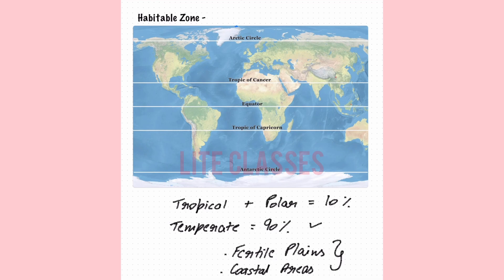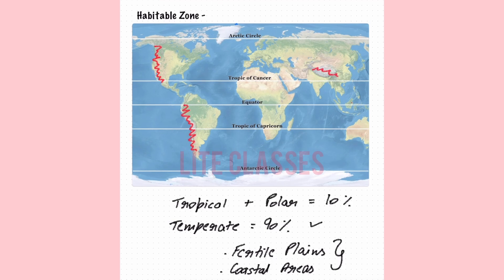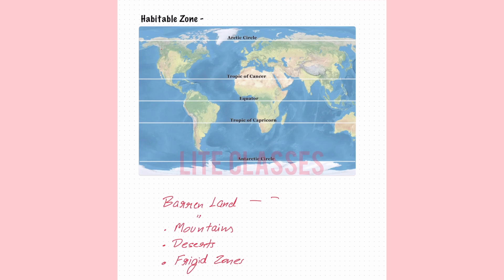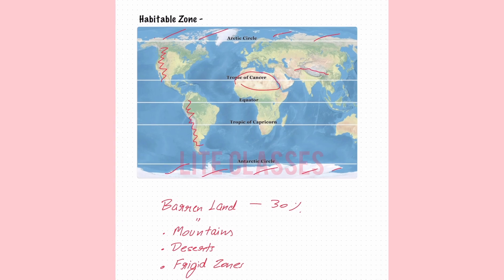Most of the temperate zone is either mountainous — like the Rockies in North America, the Andes in South America, the Himalayas in Asia — or desert like the Sahara in Africa and the Arabian Desert in the Middle East, which are again less conducive for habitation though rich in minerals. In total, around 30% of the world's total land is barren, comprising the frigid zones, mountains, and desert areas.